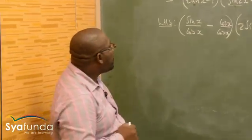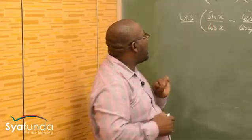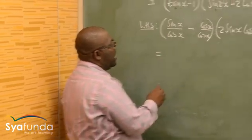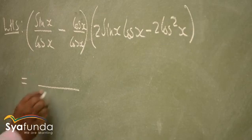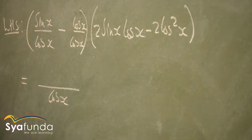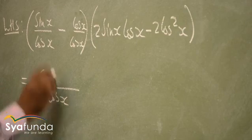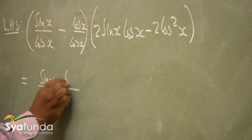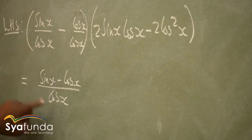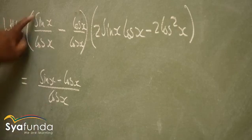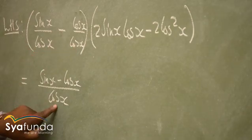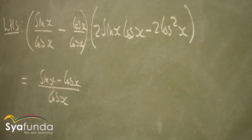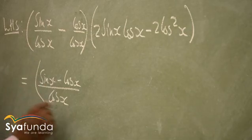Let's work on this part. Now that we have a common denominator of cos x, the numerator is just sin x minus cos x. If you work it out: cos x into cos x goes once, one times sin x is sin x, and one times cos x is cos x. Remember that we are multiplying here.